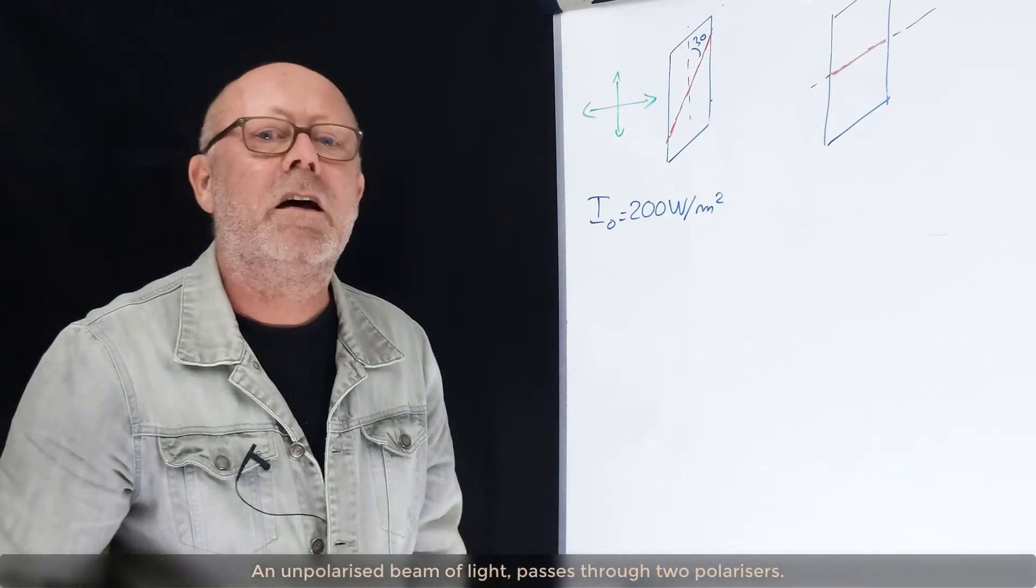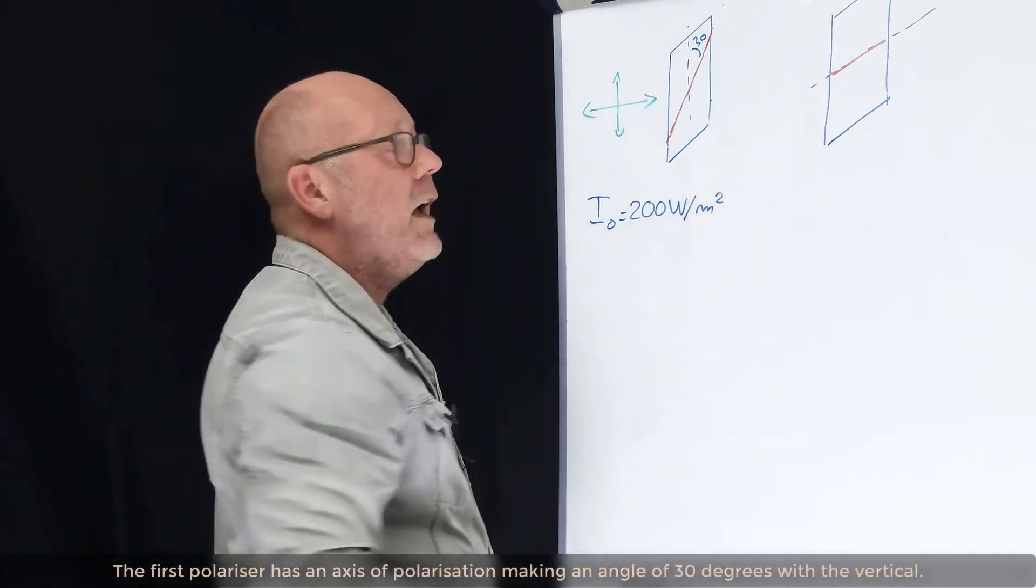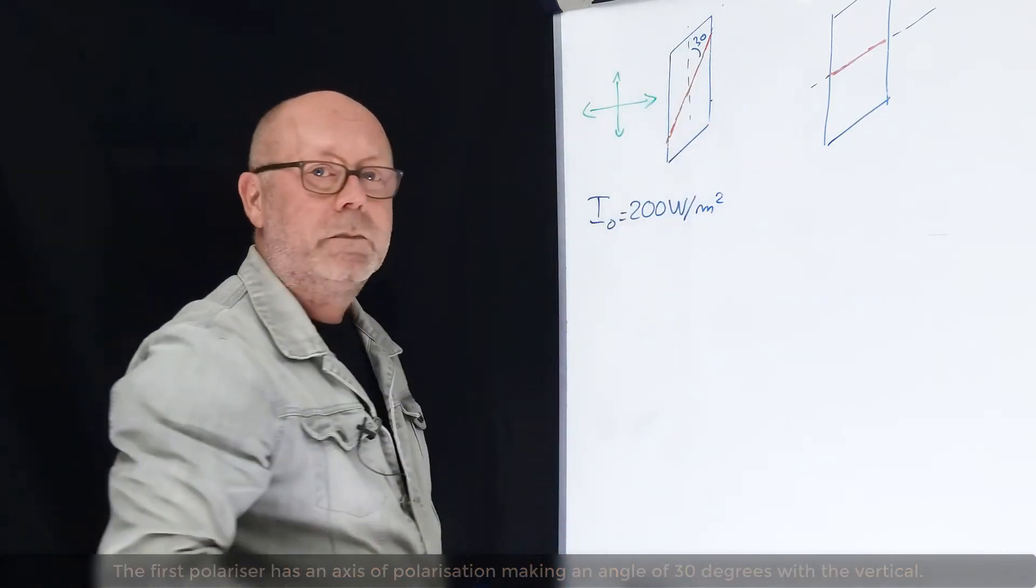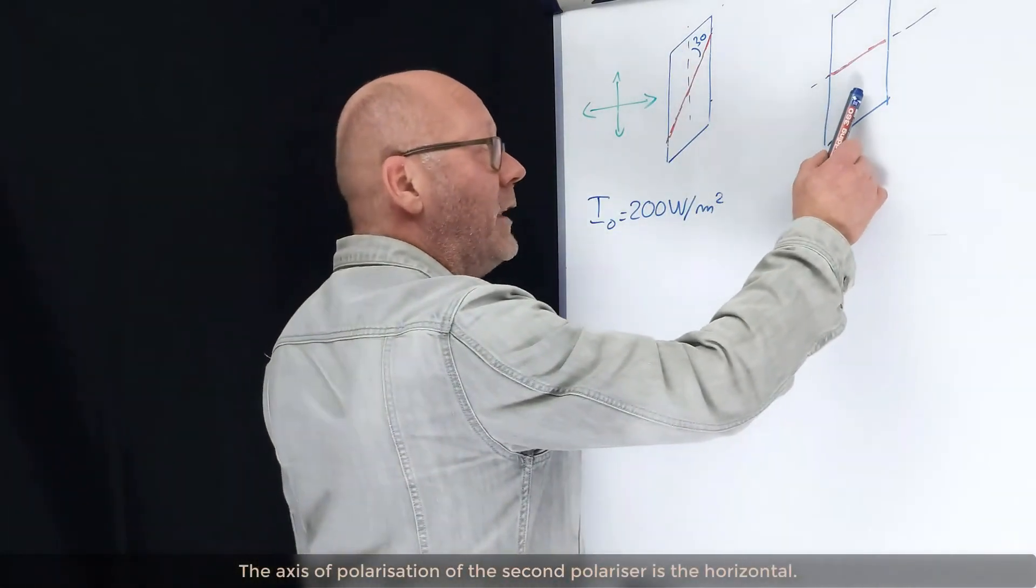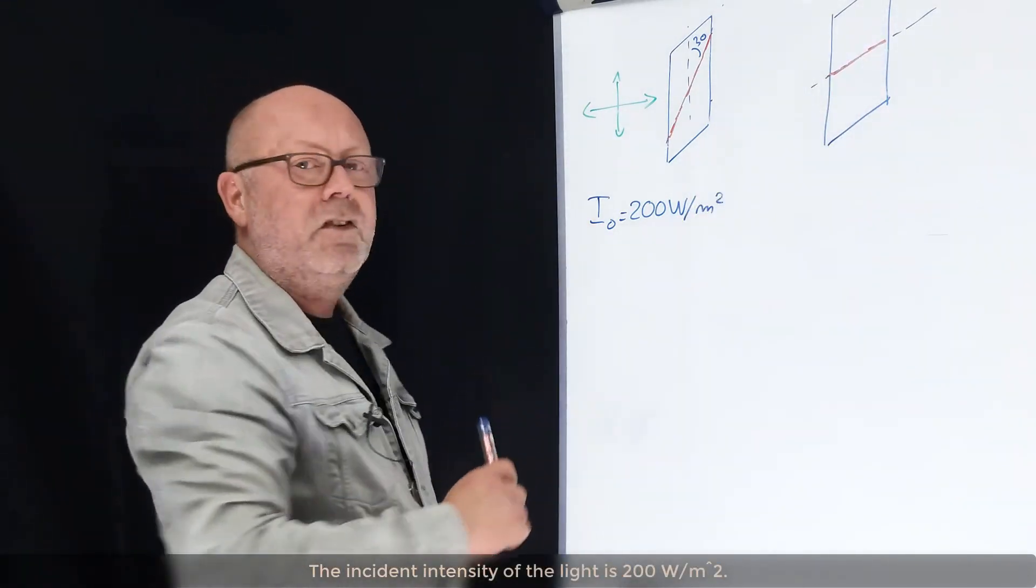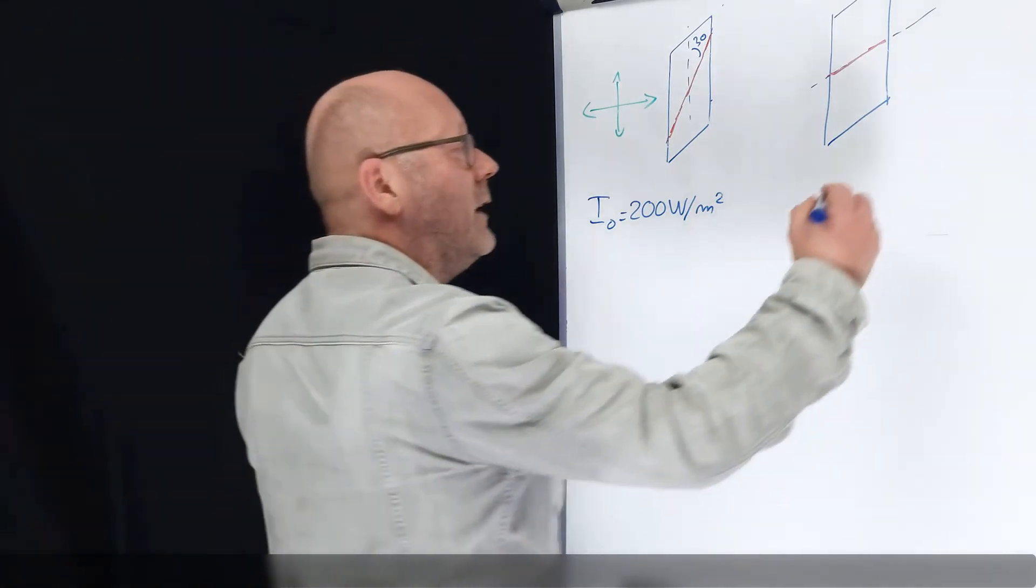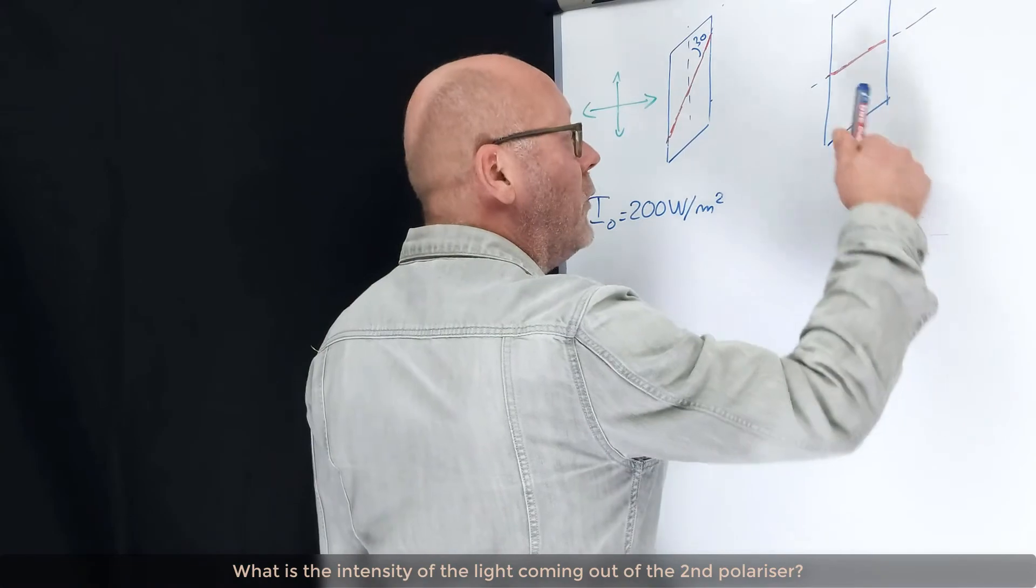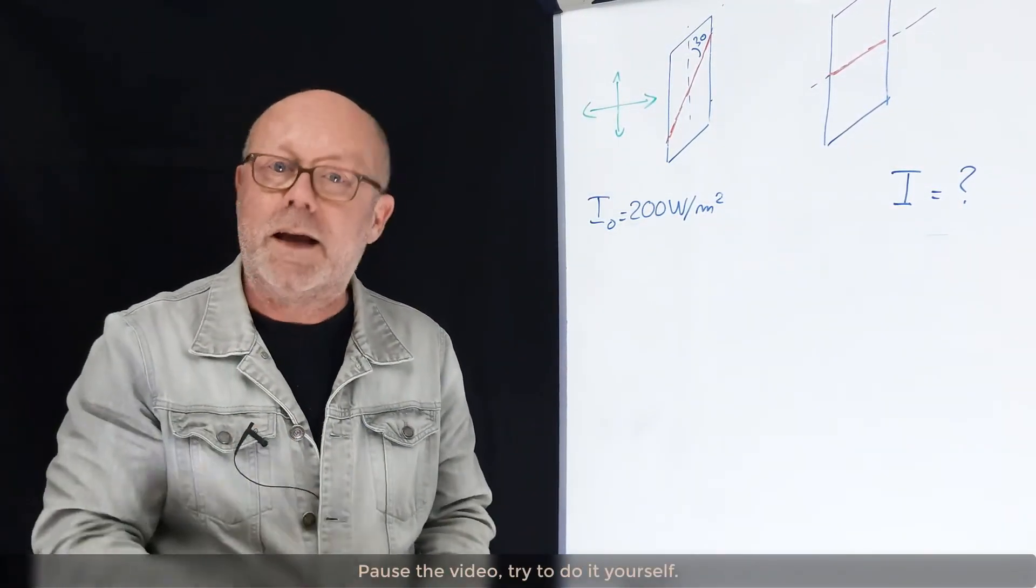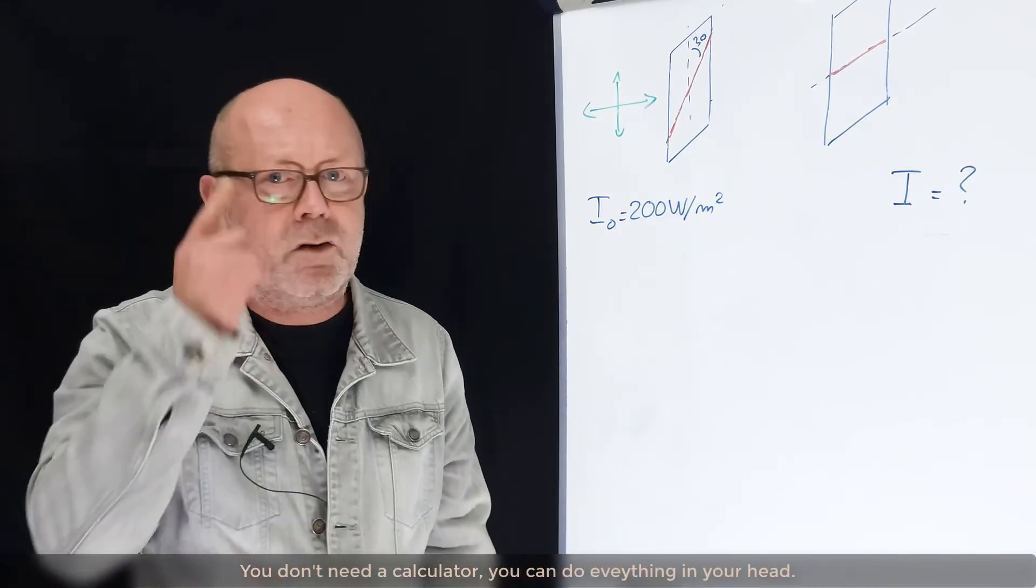An unpolarized beam of light passes through two polarizers. The first polarizer has an axis of polarization making an angle of 30 degrees with the vertical. The axis of polarization of the second polarizer is just the horizontal. The incident intensity of the light is 200 watts per meter square. The question is, what is the intensity of the light coming out of the second polarizer? Pause the video, try to do it yourself. And yeah, you don't need a calculator, you can do everything in your head.